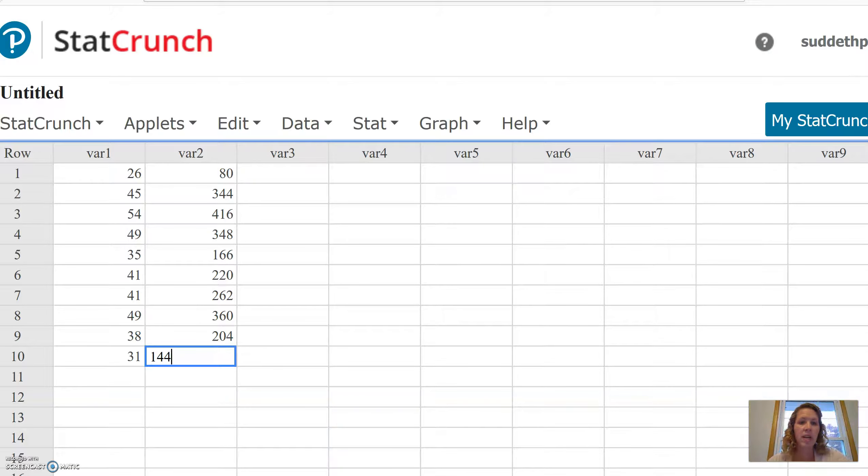So the data is 26, 45, 54, 49, 35, 41, 41, 49, 38, 31. Then the weight is 80, 344, 416, 348, 166, 220, 262, 360, 204, and 144.